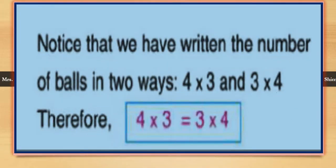Notice that we have written the number of balls in two ways — we expressed it as four times three and also three times four. Therefore, four times three equals three times four. One of the characteristics of the multiplication process is that when we multiply numbers, the order doesn't matter. Multiplication is a commutative operation.